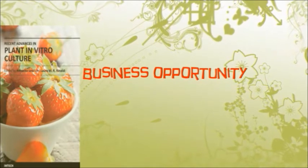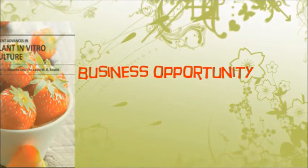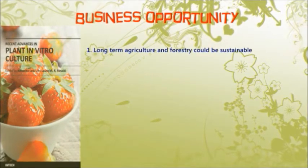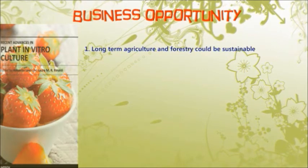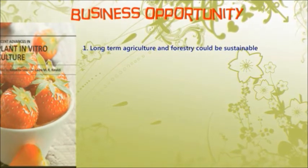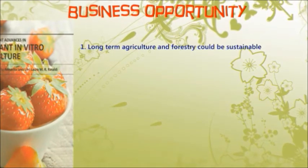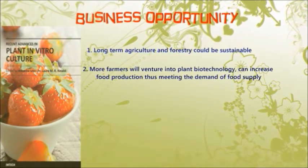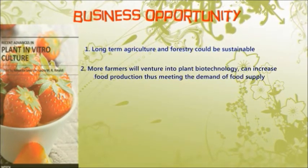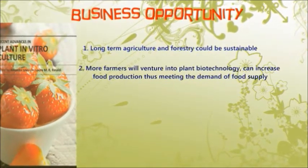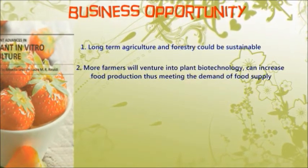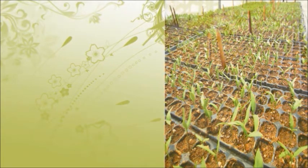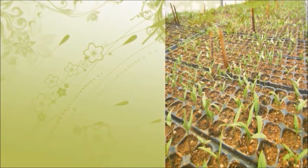Plant tissue culture represents the most promising area of application at the present time. The main advantage lies in the production of high-quality, uniform planting material that can be multiplied year-round under disease-free conditions and supplied anywhere regardless of season and weather. Through this, long-term agriculture and forestry can be sustainable. Compared to other methods of propagation, micropropagation systems are cheaper for producing large numbers of new plants and can increase production by 100% compared to other cloning methods. Thus, more farmers can venture into this business and food production can increase.